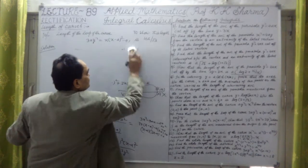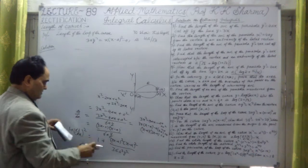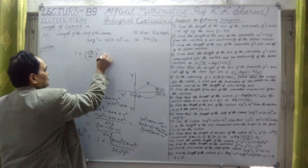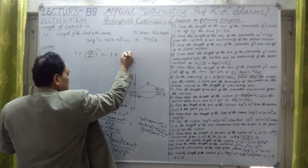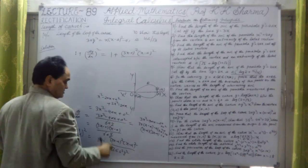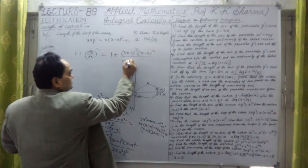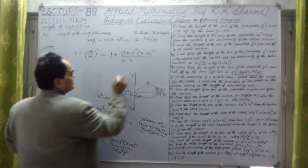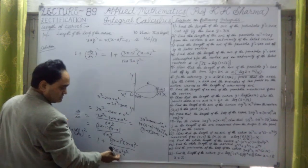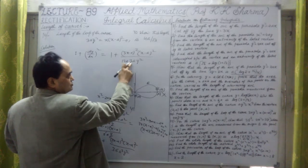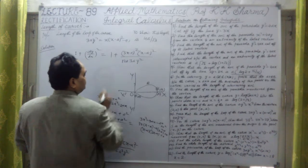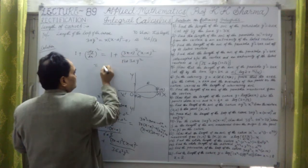We need 1 + (dy/dx)² for the arc length formula. This equals 1 + (3x-a)²(x-a)² / (36a²y²). Rewriting the denominator as 12a · 3ay², and noting from the curve equation that 3ay² = x(x-a)², we can substitute to simplify.